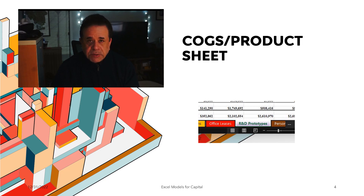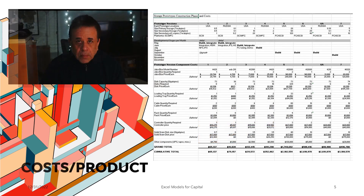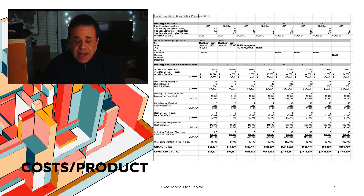That way, I can establish the gross margin. This sheet demonstrates that you can put in various products to establish what the Cost of Goods Sold is per product. In this case, we are showing different phases, different sized products, and that way we know exactly what it takes to manufacture each product, and what will ultimately establish the gross margin for each product sold, depending upon the brand and depending upon the size.